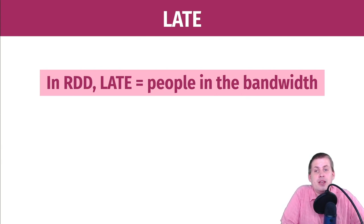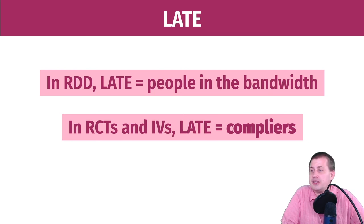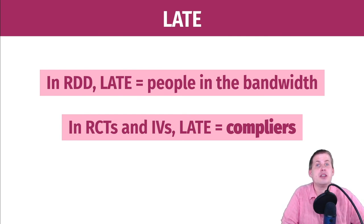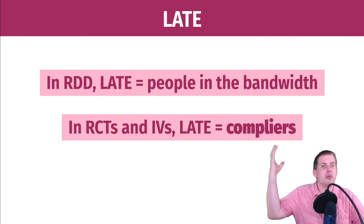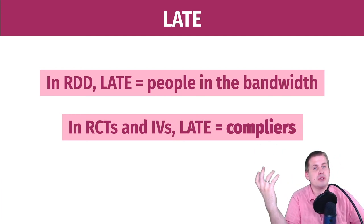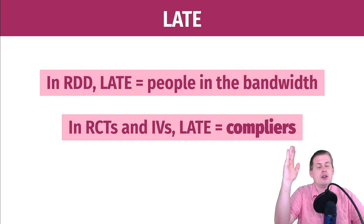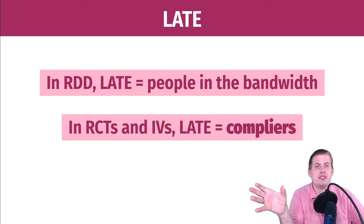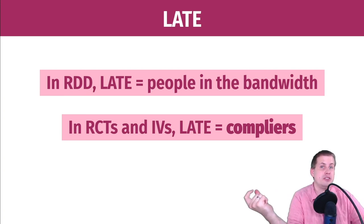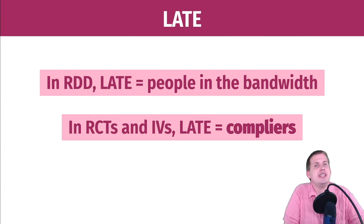In randomized controlled trials and instrumental variable situations, the local average treatment effect you're looking at is for something called the compliers — not non-compliers. When you do an instrumental variables approach, the estimate you get — your coefficient for the exogenous version of your policy — is a local average treatment effect just for compliers, not a global average treatment effect.